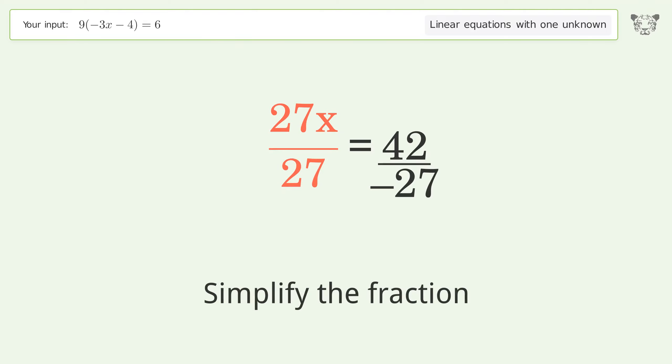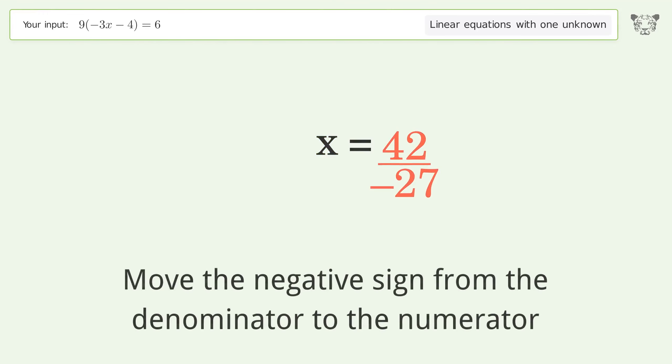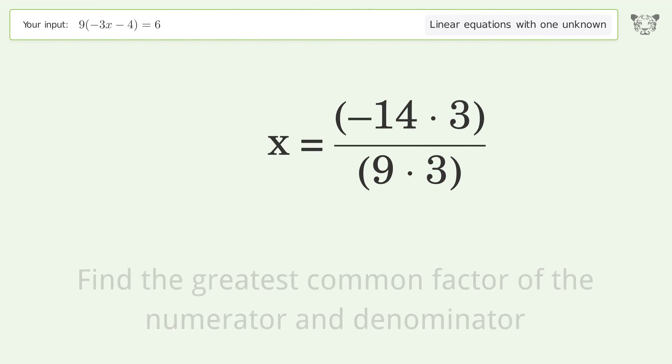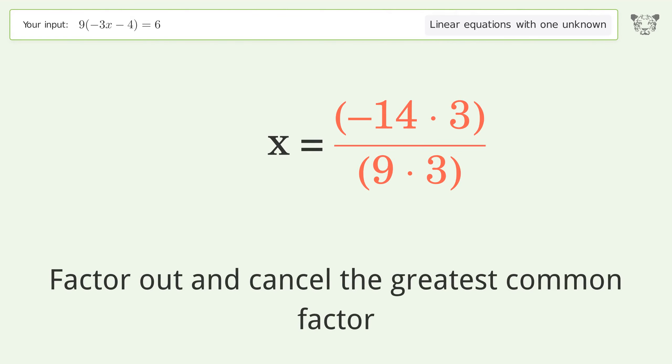Simplify the fraction. Move the negative sign from the denominator to the numerator. Find the greatest common factor of the numerator and denominator. Factor out and cancel the greatest common factor.